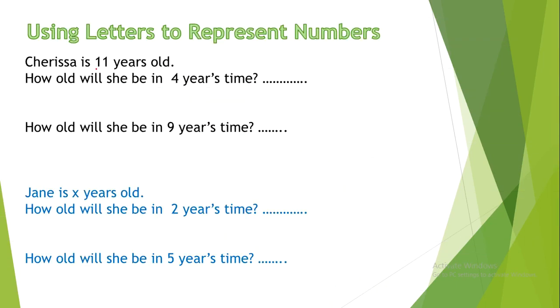Using letters to represent numbers. Charissa is 11 years old. How old will she be in 4 years time? So, 11 plus 4 equals 15 years old. How old will she be in 9 years time? 11 plus 9 equals 20.